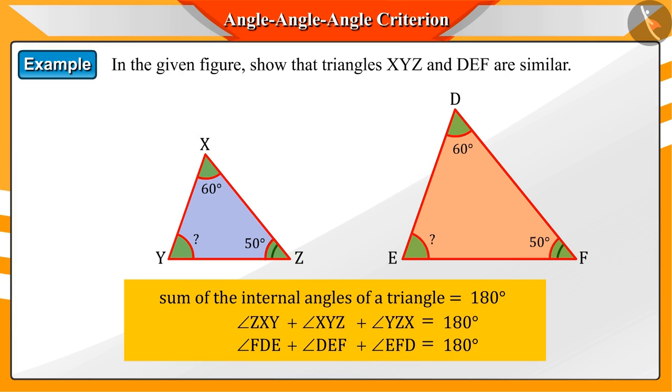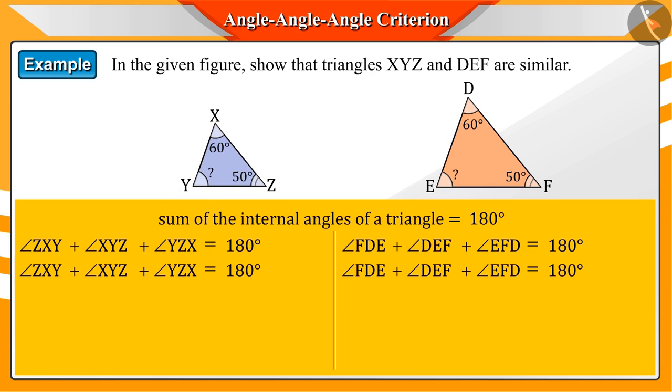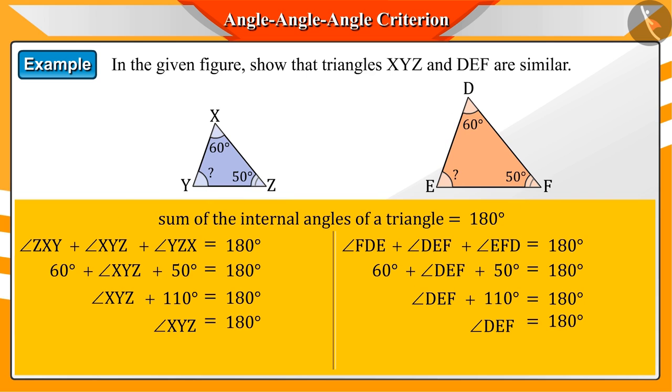We know that the sum of all the internal angles of a triangle is equal to 180 degrees. With the help of this, we can find the measurement of the third angle.